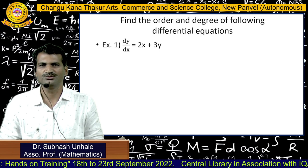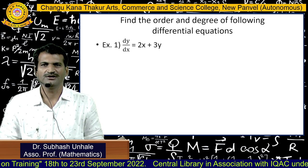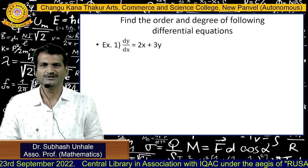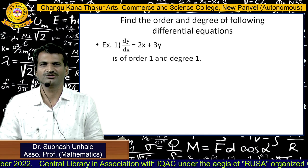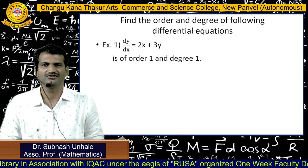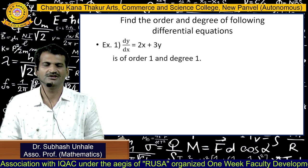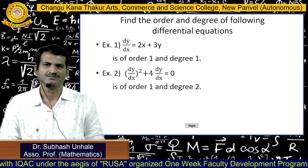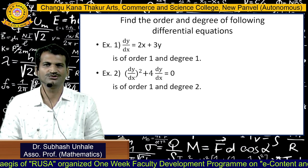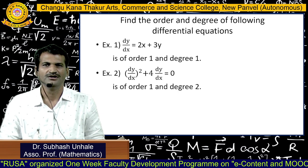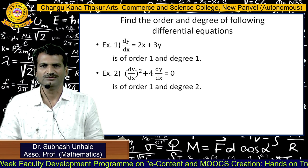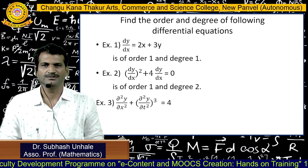For the first example, dy/dx = 2x + 3y: dy/dx is a first-order derivative and its power is 1, so this is a differential equation of order 1 and degree 1. For the second example, (dy/dx)² + 4·(dy/dx) = 0: the order is 1 and the degree is 2, since the power of dy/dx is 2.